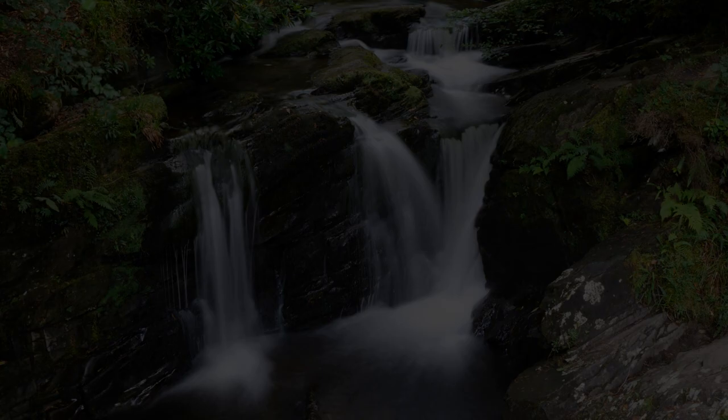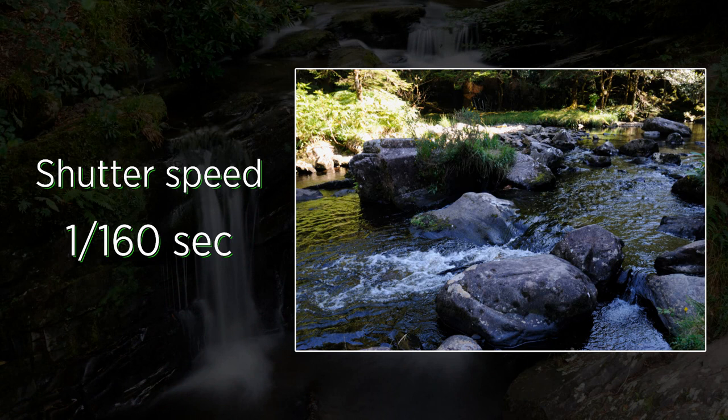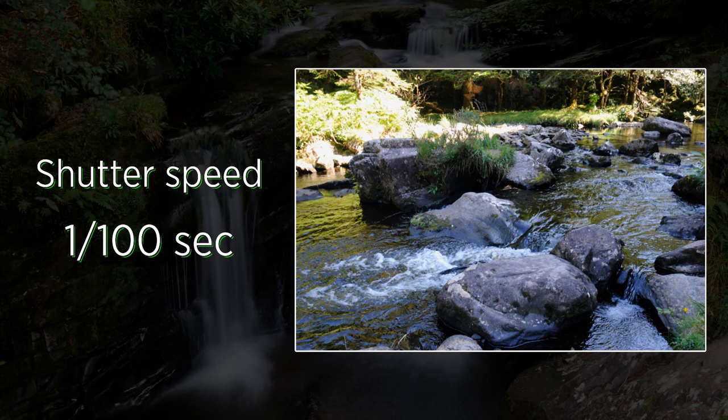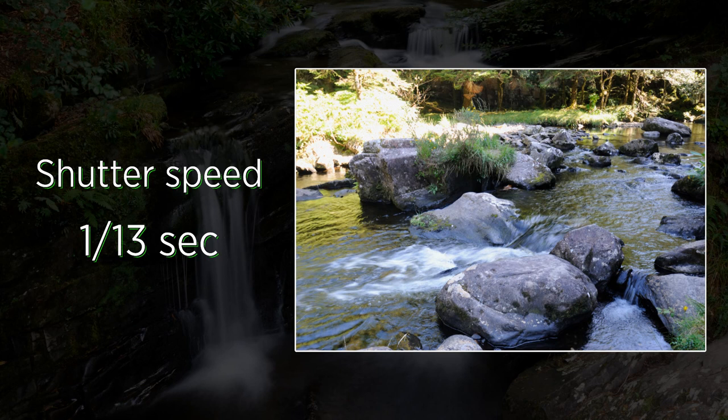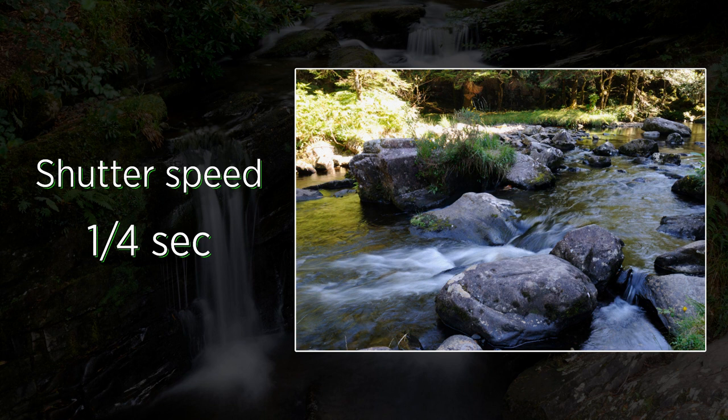I will now discuss other types of pictures you can get. I have moved upstream to demonstrate the effect of varying shutter speeds on a stream. Here's a series of pictures of part of a stream. Once again we start with a fast shutter speed and each picture has a slower shutter speed than the one before it. The first picture appears frozen in time, and as shutter speeds get slower the water takes on a smoother, milkier appearance with more detail of the water surface being lost.